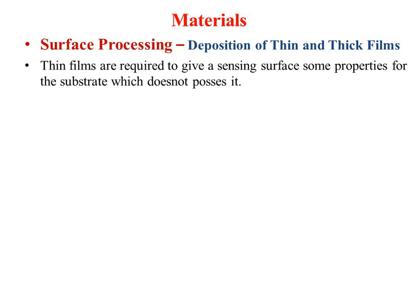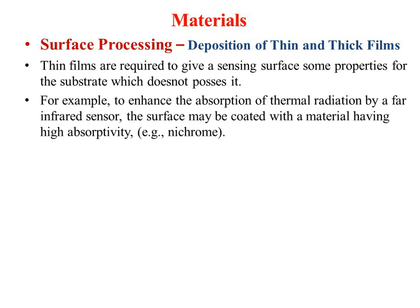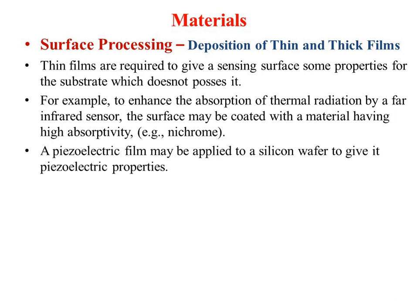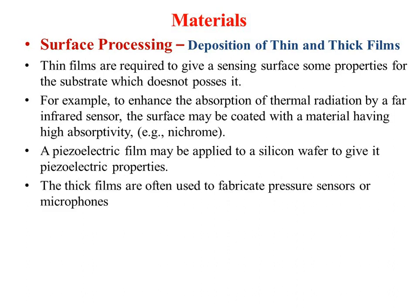For example, silicon does not possess the piezoelectric effect, so we need a piezoelectric film to be deposited on its surface. Another example: to enhance the absorption of thermal radiation in the far infrared range, the surface may be coated with a material having high absorptivity — nichrome has this absorptivity and absorbs far infrared radiation. Thick films are often used to fabricate pressure sensors and microphones.